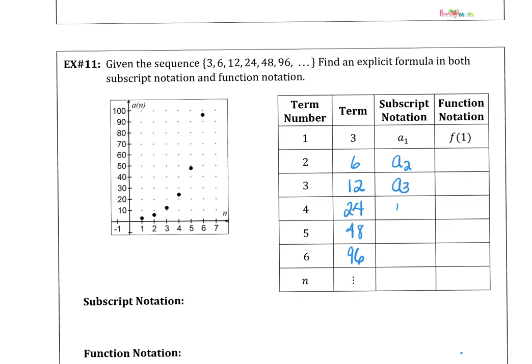We have the a sub 2, a sub 3, a sub 4, a sub 5, a sub 6, and a sub n. Or the f of 2 through f of 6 to complete that function notation or the subset notation.